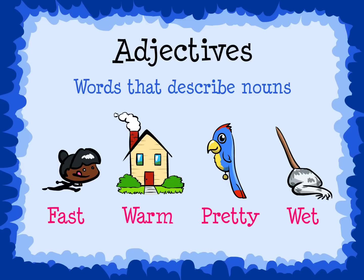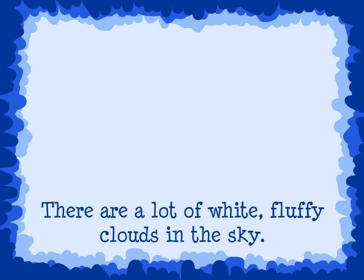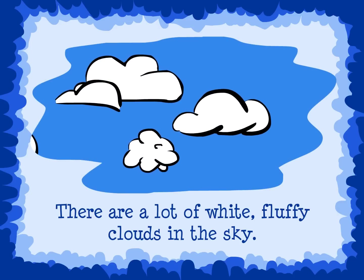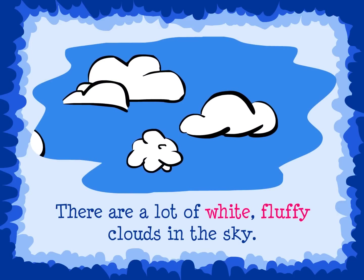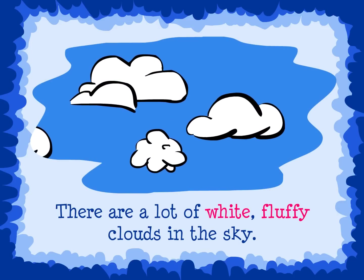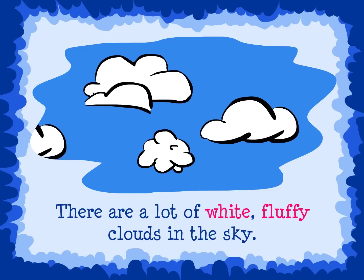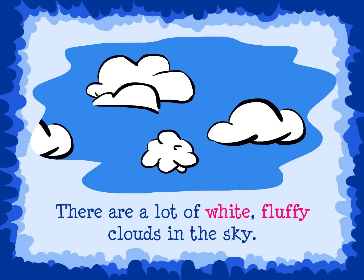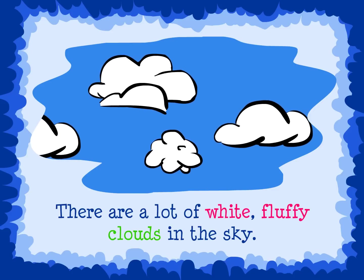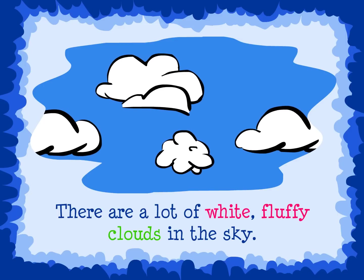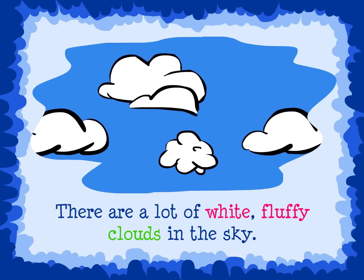Take this sentence for example. There are a lot of white, fluffy clouds in the sky. The words white and fluffy are adjectives. They tell about the noun, which are clouds. White and fluffy describe how the clouds look.